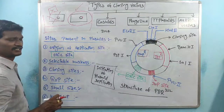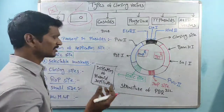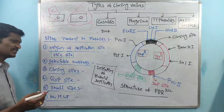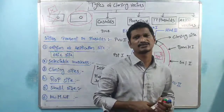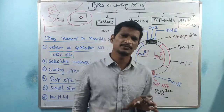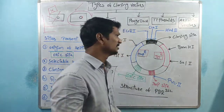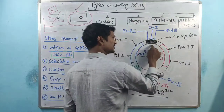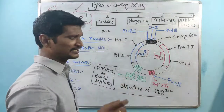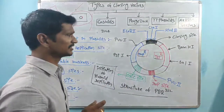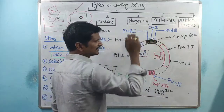That is about ampicillin, tetracycline, chloramphenicol, and kanamycin — several types of antibiotic resistant genes used as selectable markers. Next is the cloning site — where we insert the desired DNA within the plasmid at a particular location. This site is called the cloning site. Scientists insert desired DNA mostly at this site.